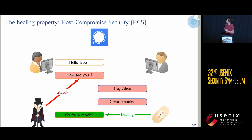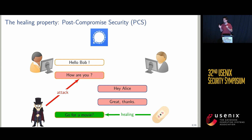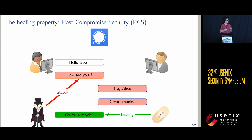Suppose we have Alice and Bob communicating through Signal, exchanging messages. At some point, Alice gets compromised for some reason. The adversary recovers some messages and some information about the key material to recover messages. Since Signal is post-compromised secure, it means that at some point the adversary will no longer have access to the messages and the protocol will heal.